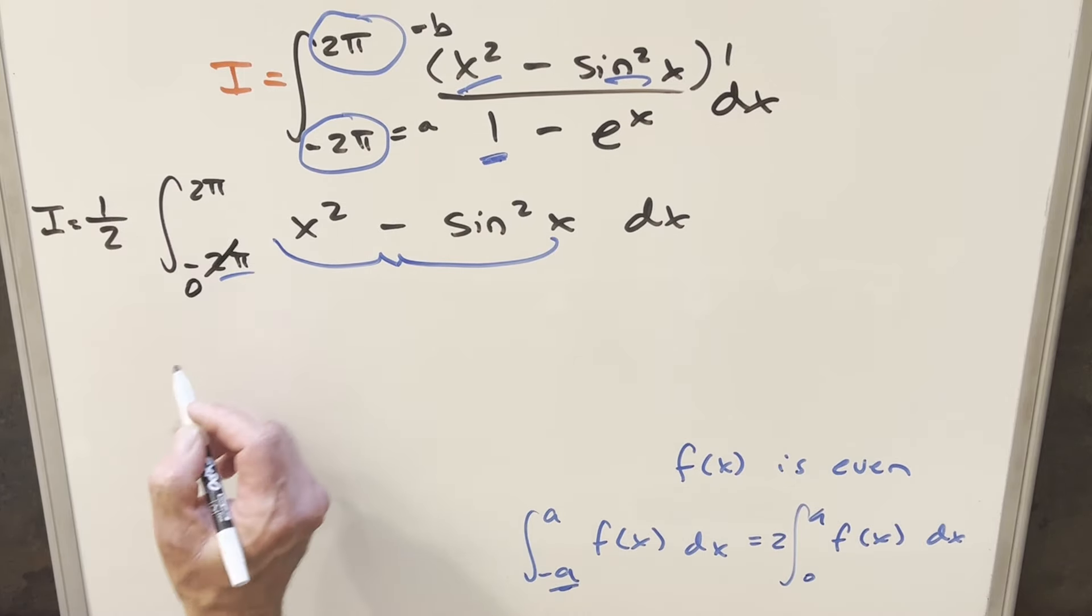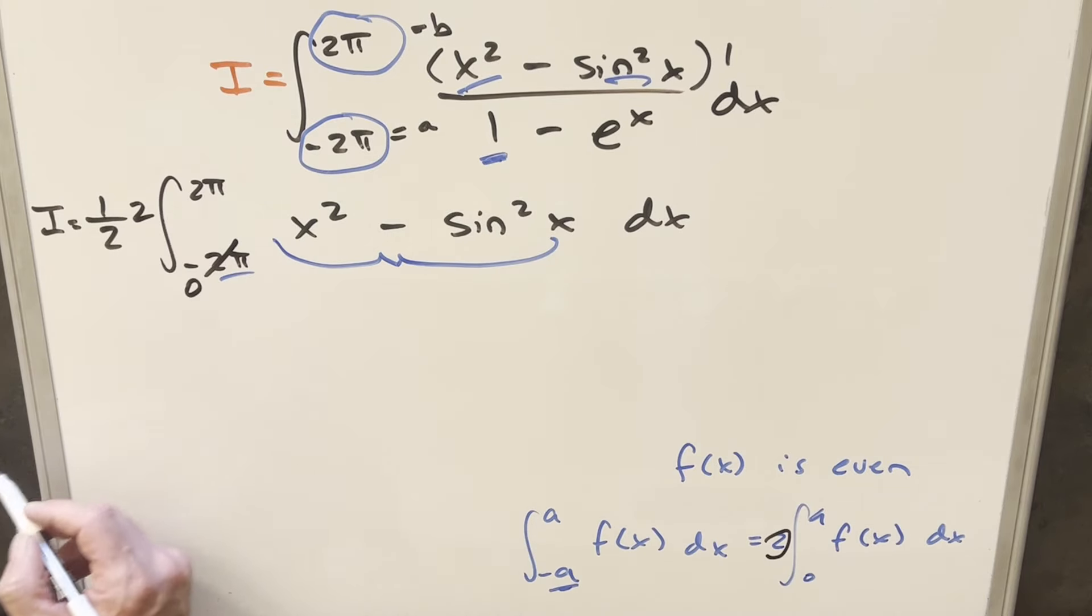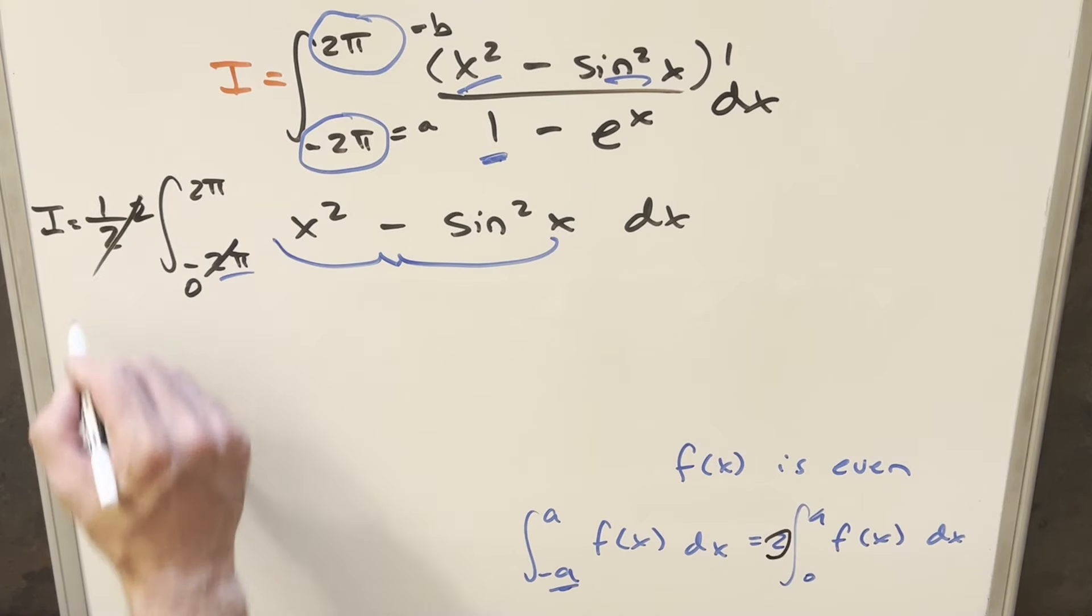So we'll cross that out, make that a 0. And then all we need to do is we just need to bring 2 up front. So we bring a 2 up front, but that's nice because that's going to just cancel with this 1/2.